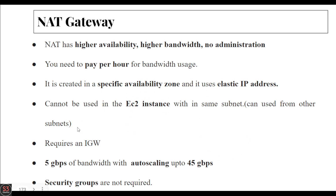It cannot be used by an EC2 instance within the same subnet. It requires an internet gateway — if you want to create a NAT gateway, you also have to create an internet gateway. The bandwidth starts from 5 Gbps and can be auto-scaled up to 45 Gbps. NAT gateway does not require any security groups, unlike NAT instances.